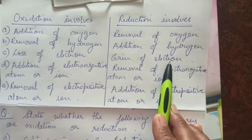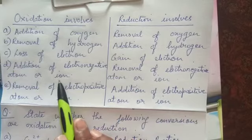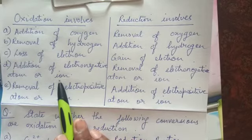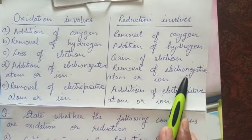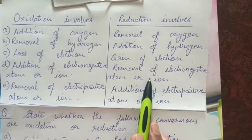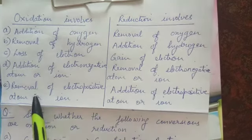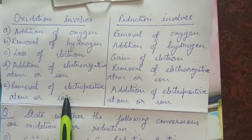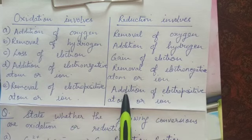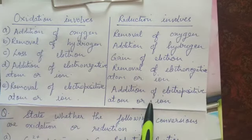Then the next point is addition of electronegative atom or ion that is considered to be oxidation, and removal of electronegative atom or ion is reduction. In the similar way, removal of electropositive atom or ion is oxidation and addition of electropositive atom or ion is reduction.